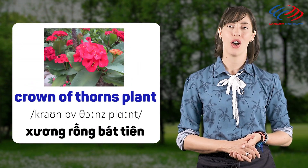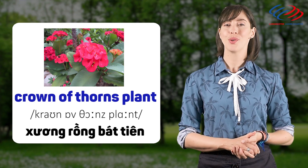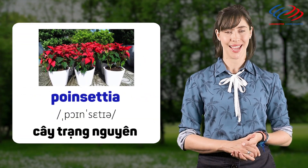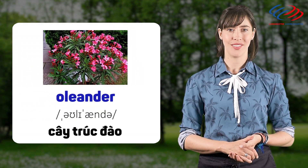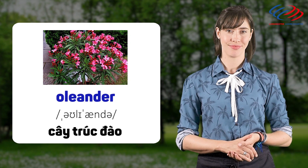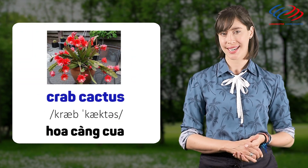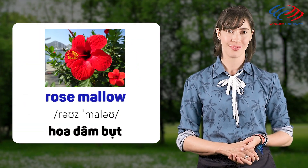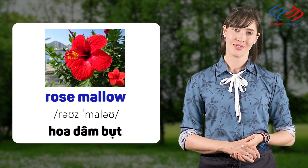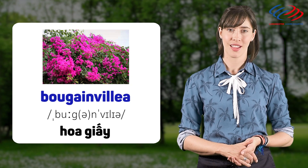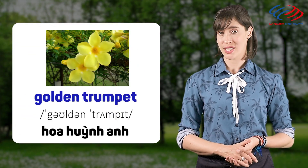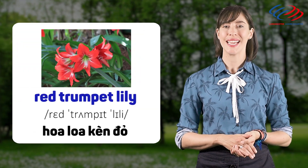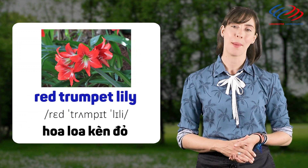Crown of thorns plant. Crown of thorns plant. Poinsettia. Poinsettia. Oleander. Oleander. Crab cactus. Crab cactus. Golden trumpet. Golden trumpet. Red trumpet lily. Red trumpet lily.